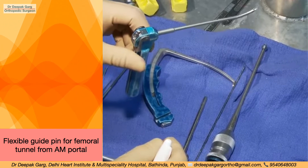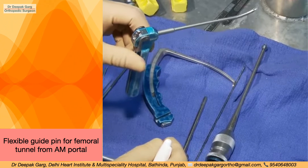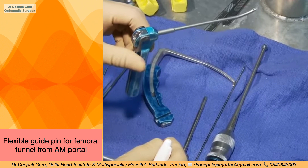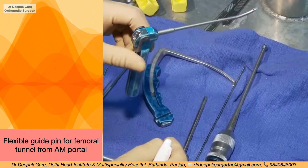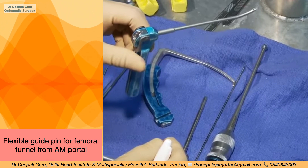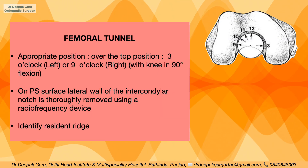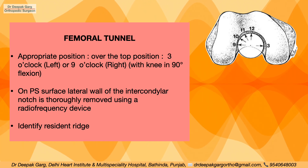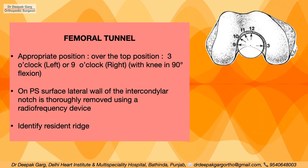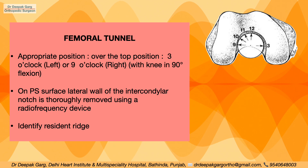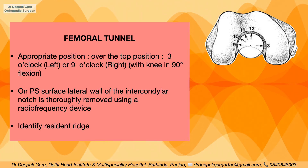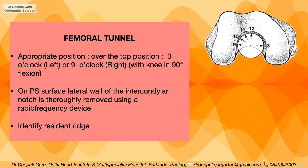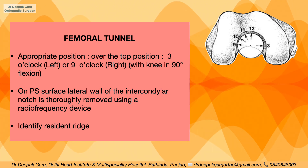After creating the tibial tunnel, we start with the femoral tunnel. We use a flexible guide pin for the femoral tunnel from the anteromedial portal. We need two axes to identify the exact entry point. From the front view, we use the over-the-top position — approximately 3 o'clock on the left knee or 9 o'clock on the right knee — with the knee in 90 degrees of flexion.